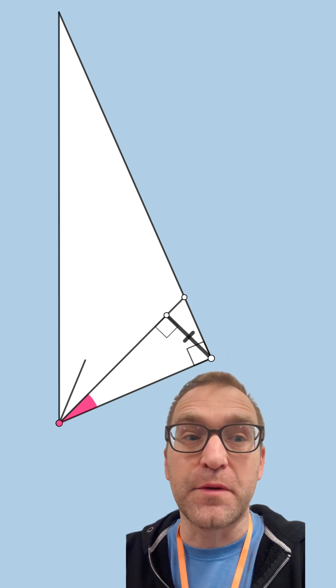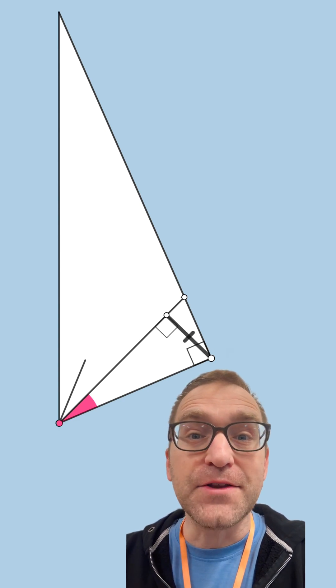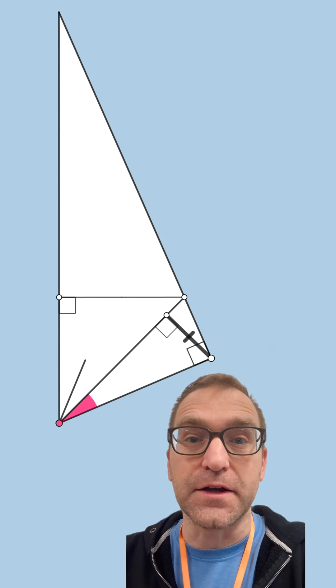Next, we're going to drop a perpendicular right there and also right here within the big right triangle.